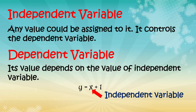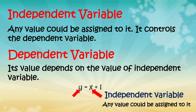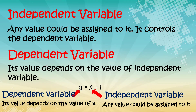So sa equation natin na y equals x plus 1, si x siya yung ating independent variable wherein any value could be assigned to it, at si y ang ating dependent variable — its value depends on the value of x. Halimbawa, ang x natin dito ay 1, so ang magiging value ng y ay 2. Kung ang value ng x natin ay 2, ang value ng y natin ay 3.